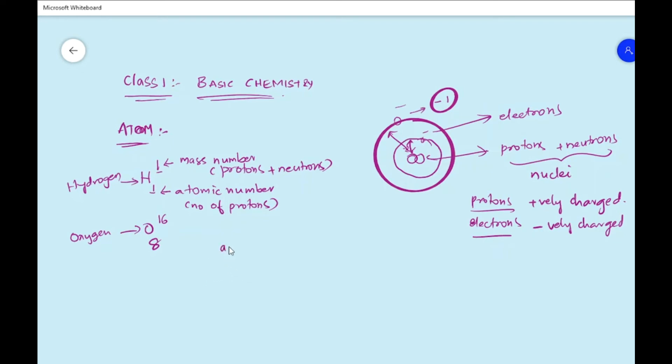So we can simply rewrite this as an equation where atomic mass equals atomic number plus number of neutrons. So mass equals protons plus neutrons.